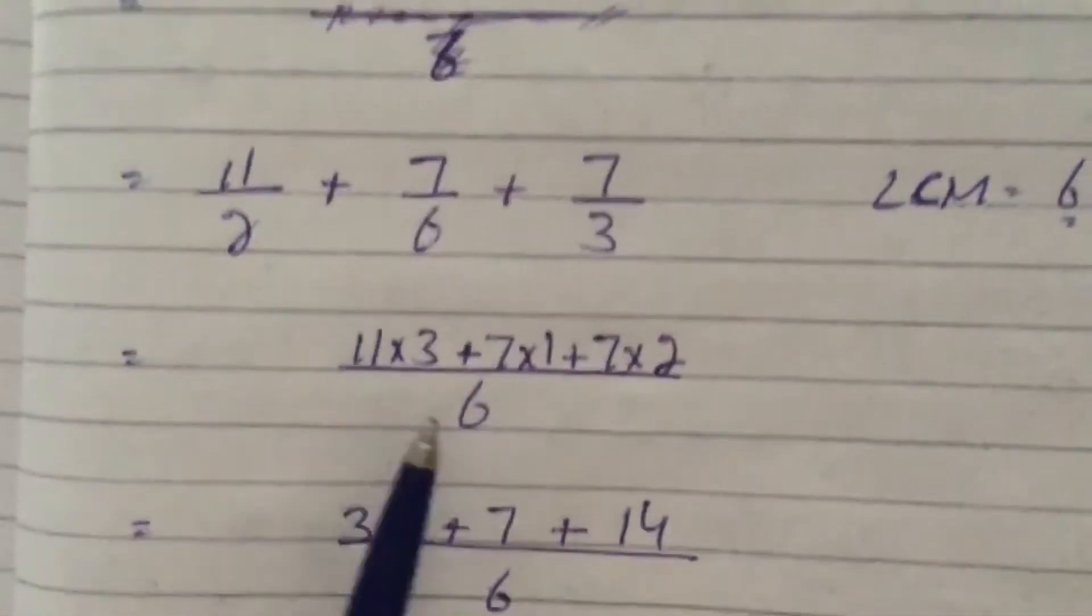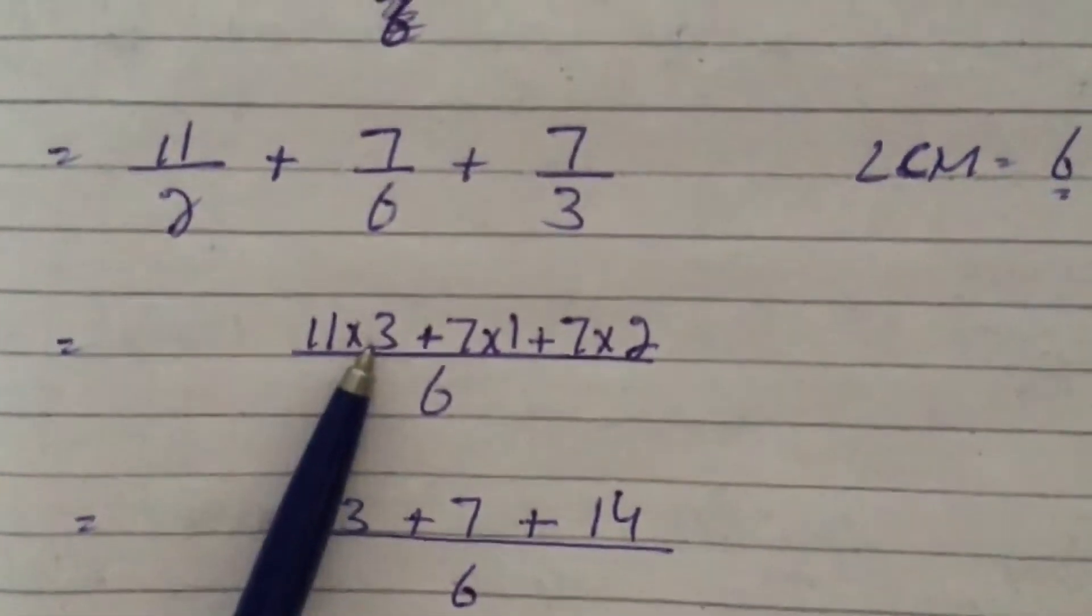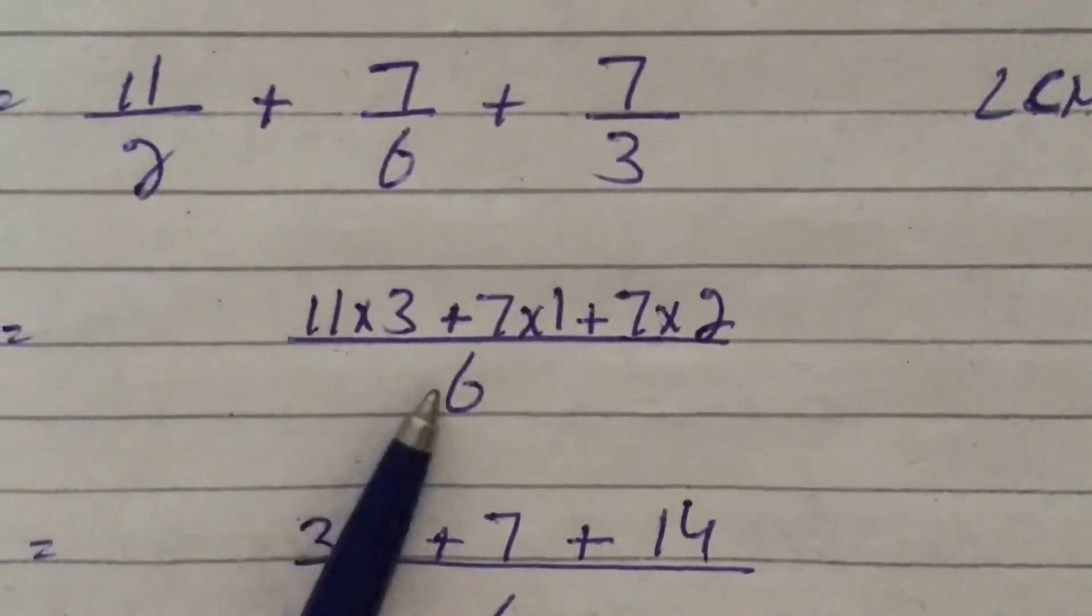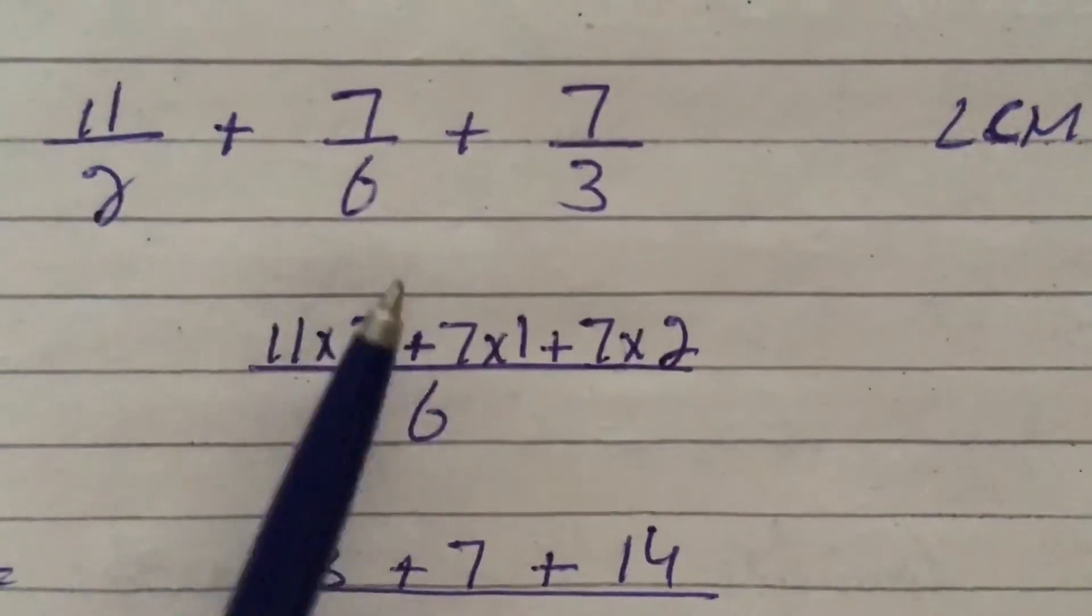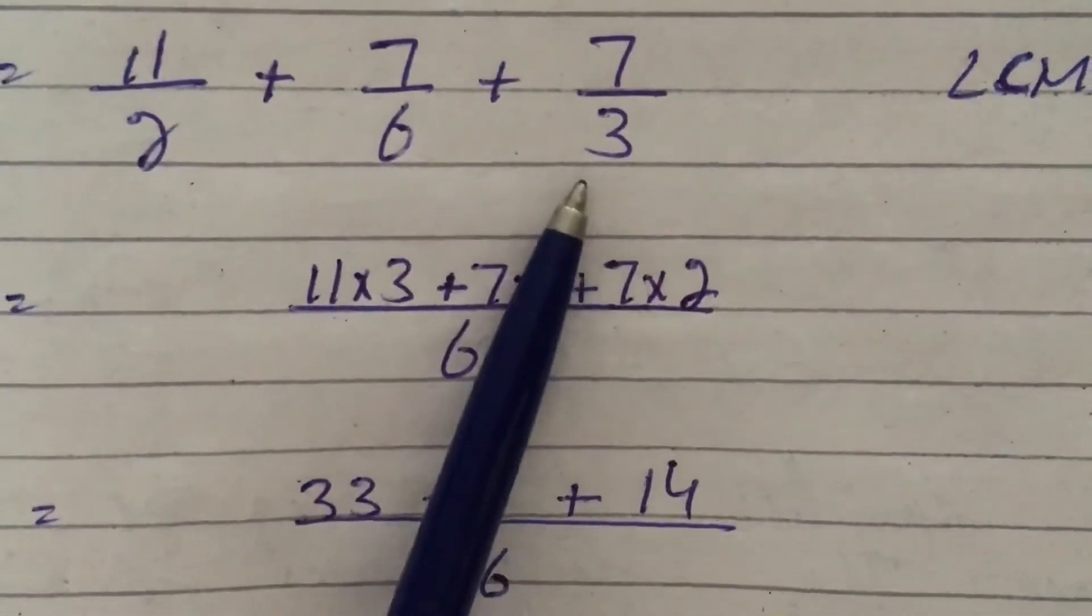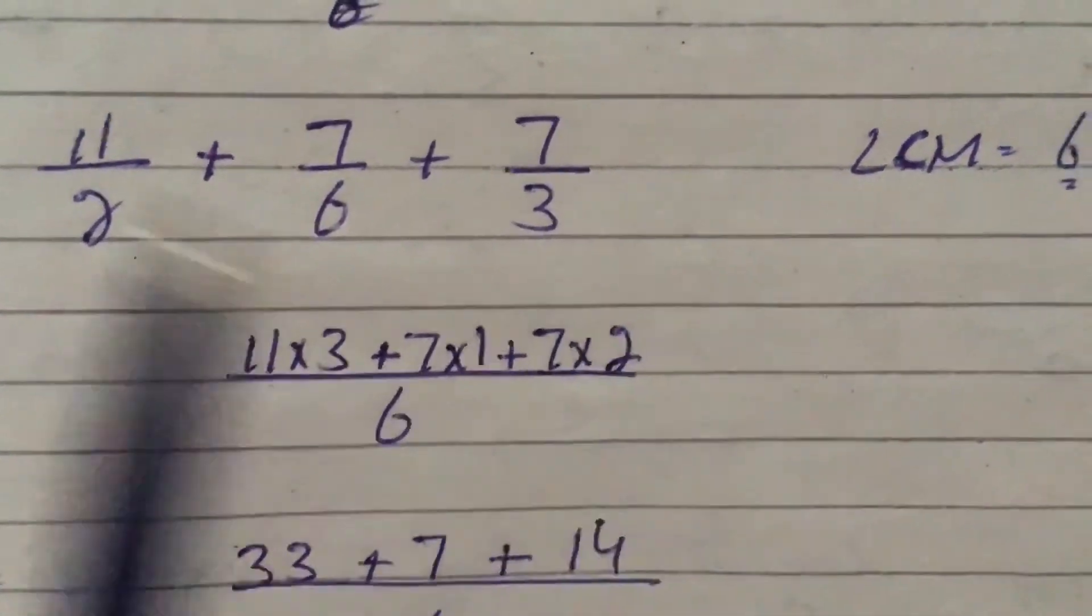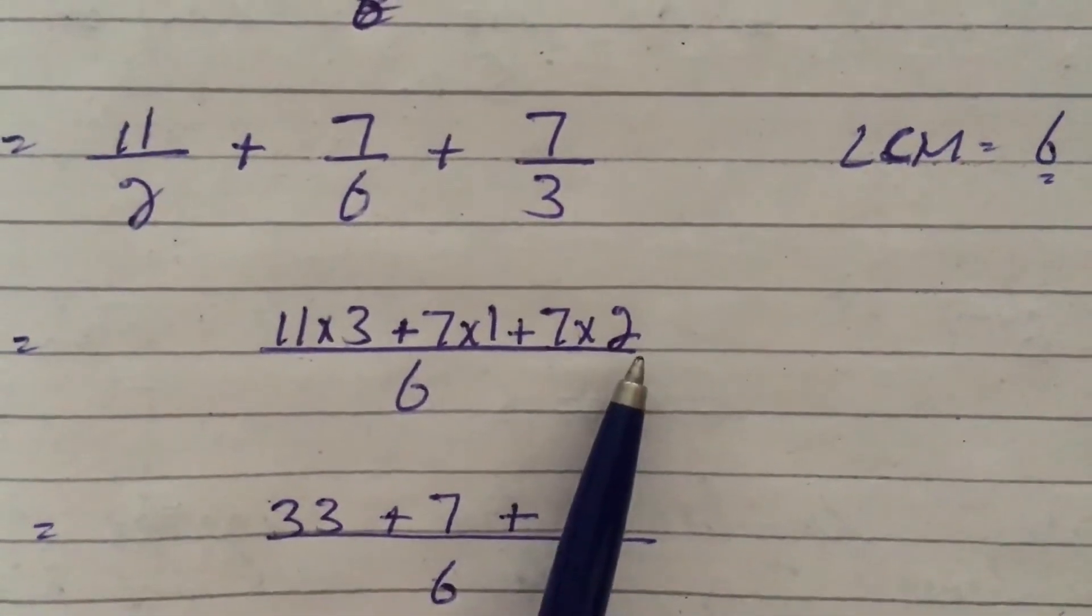Now where we are going to find out 6 in the table of 2? 2 times 3 are 6, so 11 multiply by 3. Plus 6 times 1 is 6, so 7 multiply by 1. Plus where we can find out 6 in the table of 3? 3 times 2 are 6, so that 2 is going to be multiplied with 7, so 7 multiply by 2.